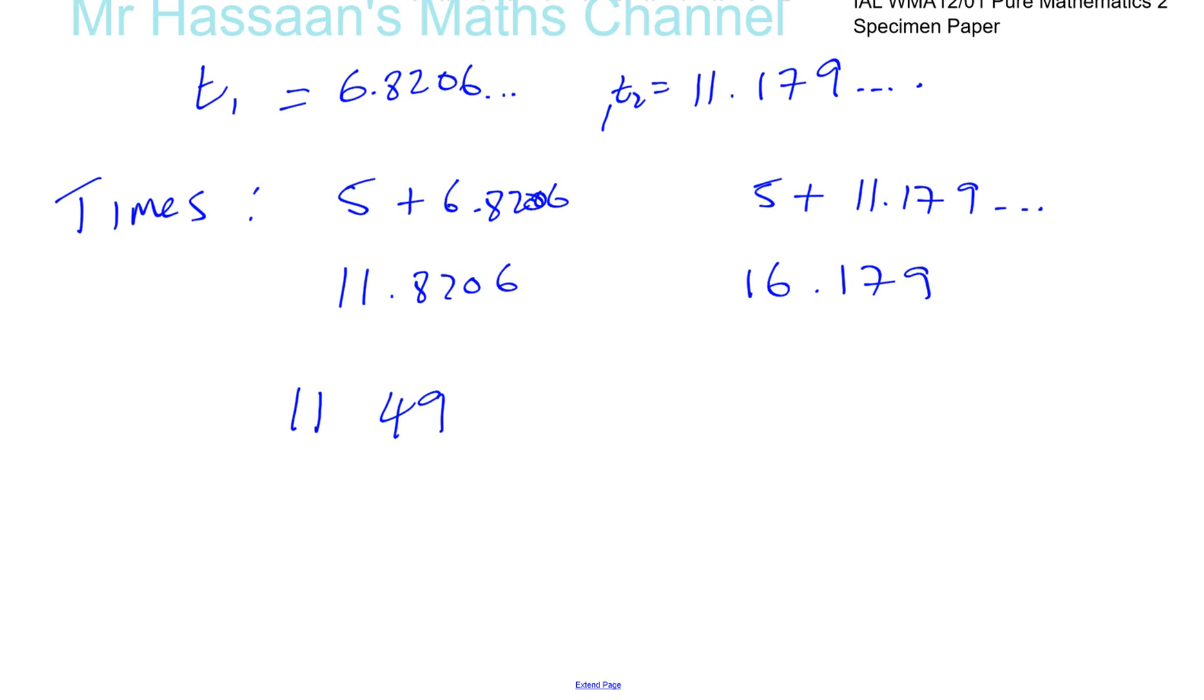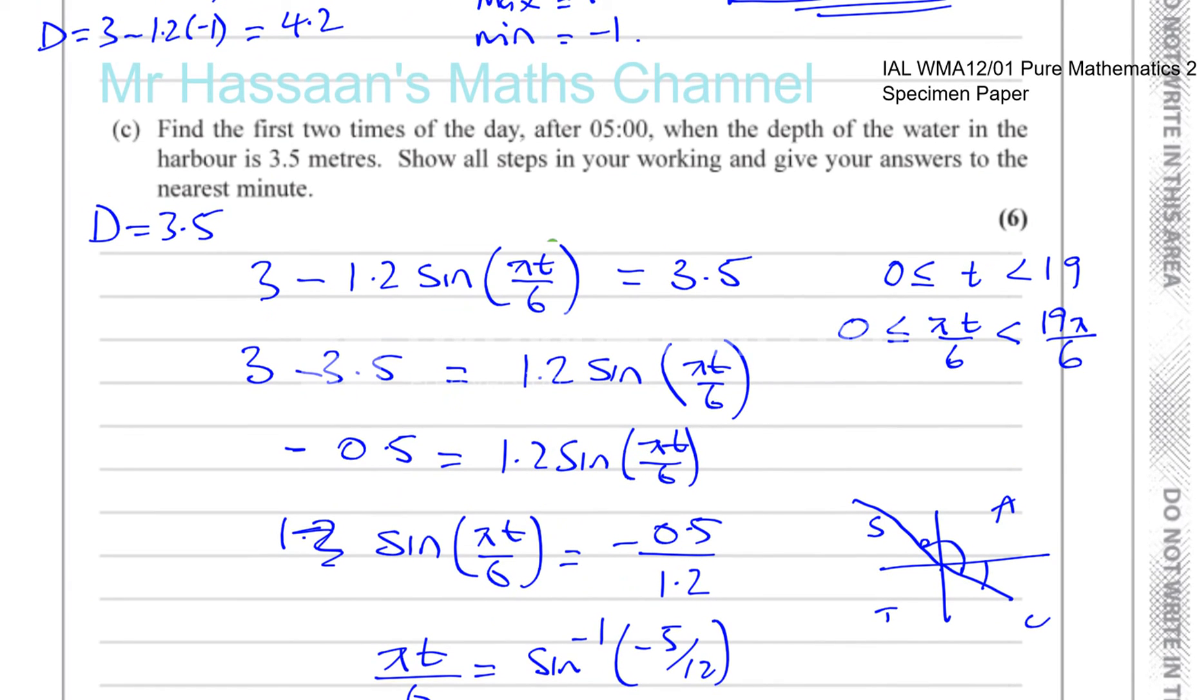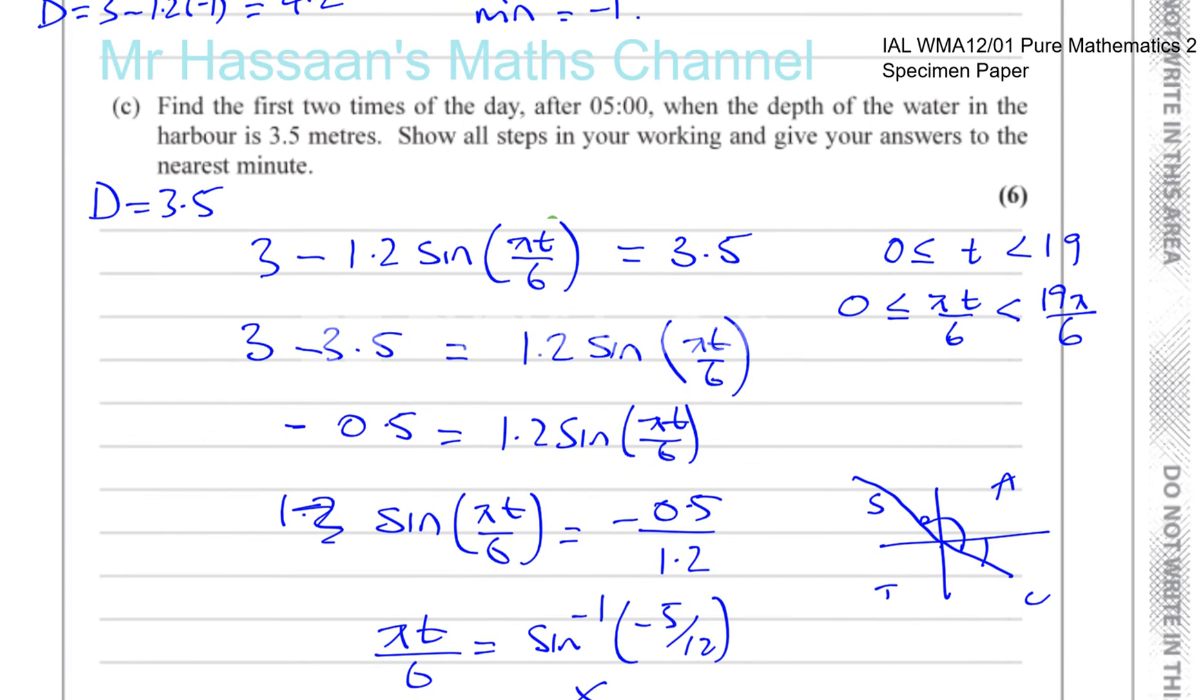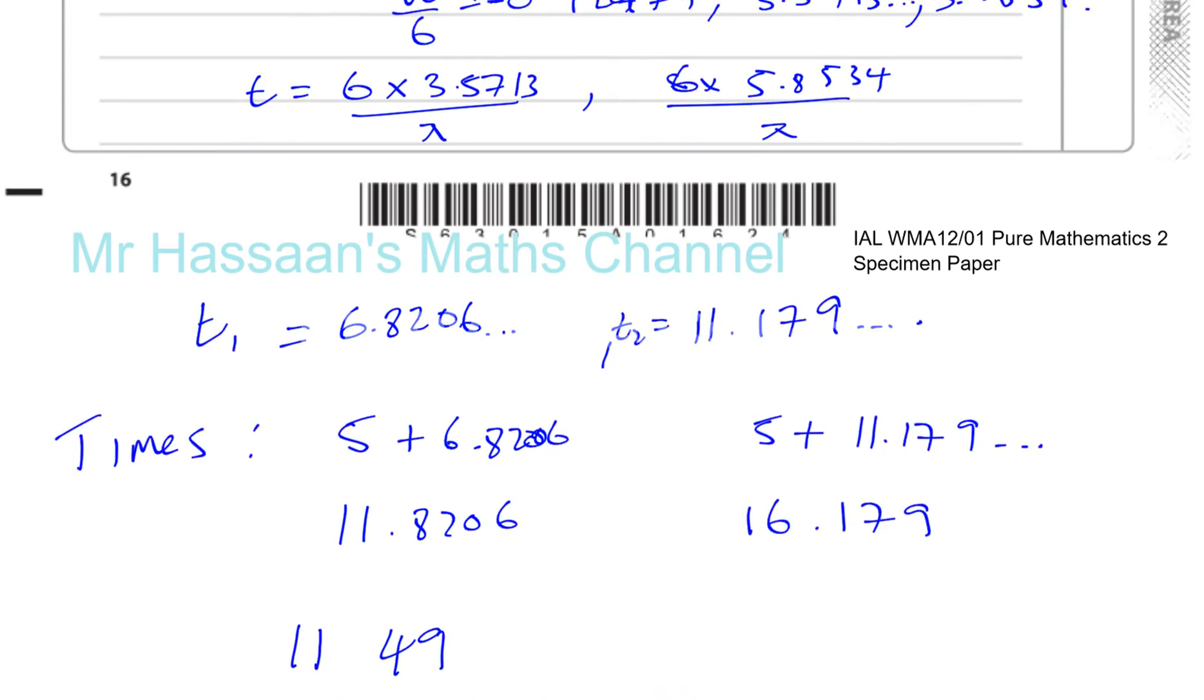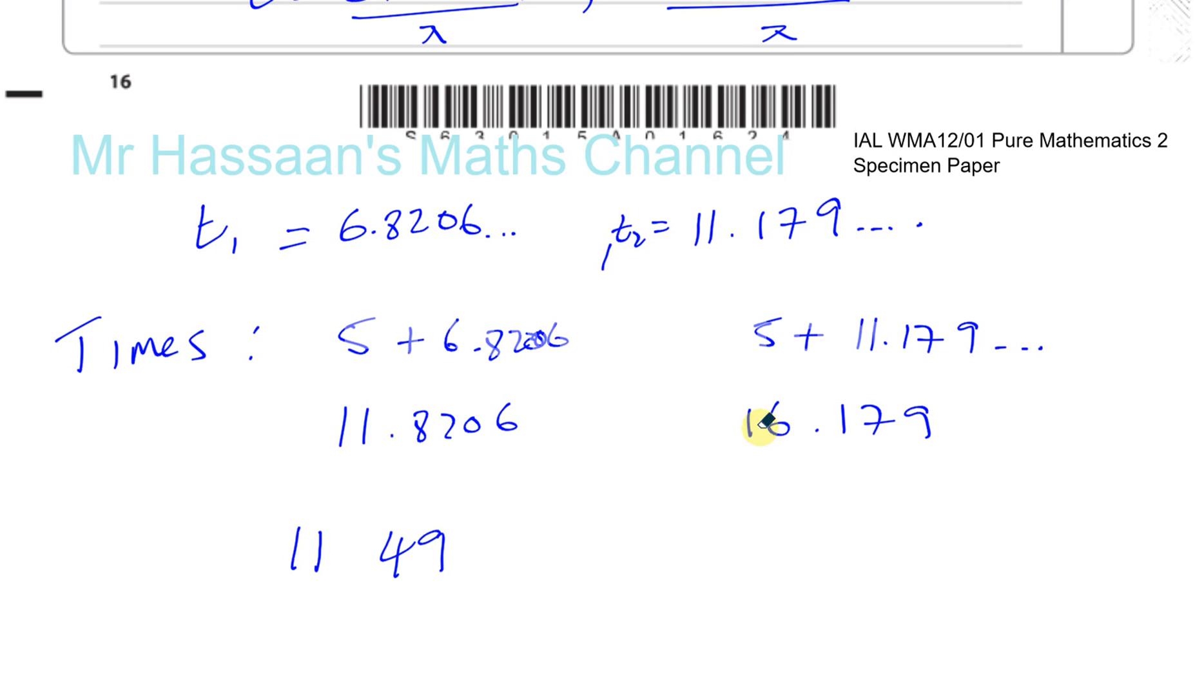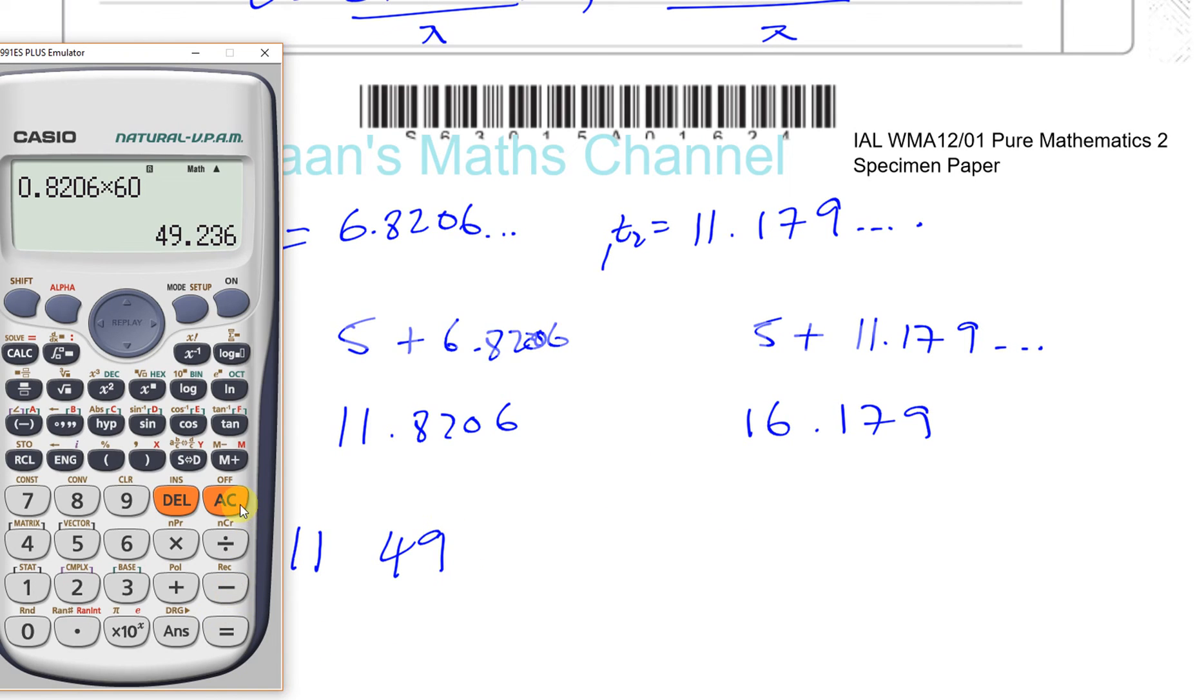Does it say to the nearest minute or anything? To the nearest minute. Good, yes. 11.49. And this is going to be, so we take 0.179 and see how many minutes that is. Because that's an hour. Times by 60 to make it into minutes.